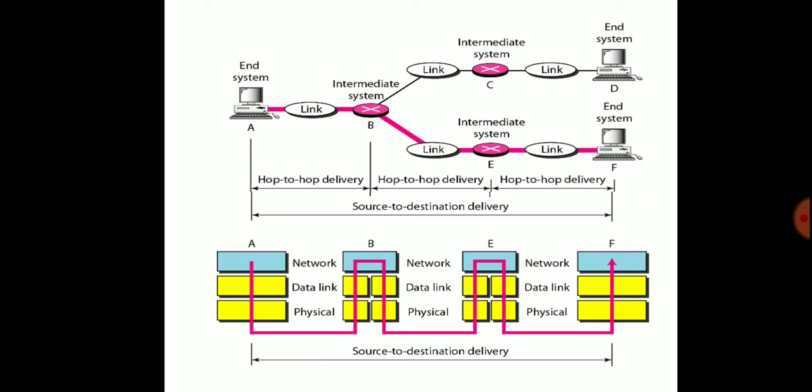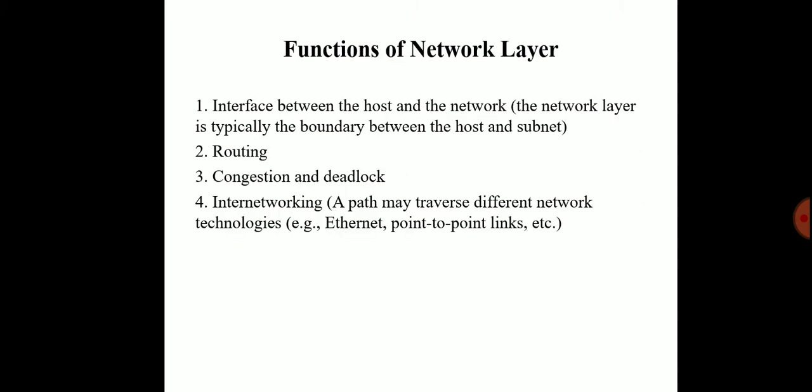The network layer is responsible for delivery of individual packets from the source. The functions of the network layer: number one is the interface between the host and network — that is, the network layer is typically the boundary between the host and the subnet. The second one is routing. The third one is congestion and deadlock. The fourth one is internetworking — that is, a path that transfers across different network technologies, for example Ethernet, point-to-point links, etc.